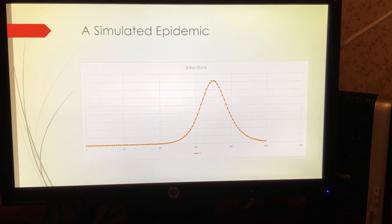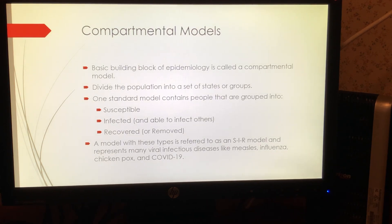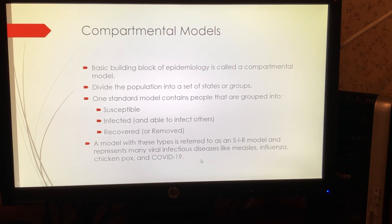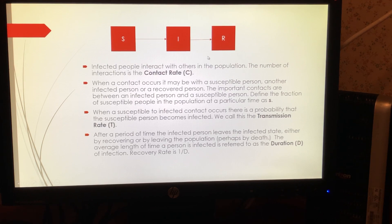How do we build a model that looks like a typical epidemic? Epidemiologists work with things called compartmental models. A compartmental model divides the population into a set of states or groups. The standard model we're talking about today is called the SIR model, because it contains people that are susceptible to being infected, people that are currently infected, and people that have recovered. SIR is an acronym for Susceptible, Infected, and Recovered. SIR models are commonly used to represent viral infectious diseases like measles, influenza, chickenpox, and the current coronavirus outbreak.